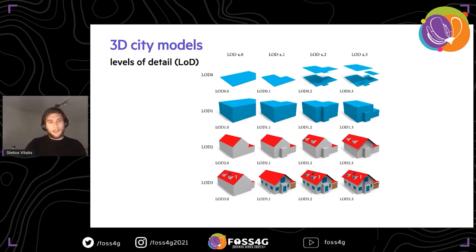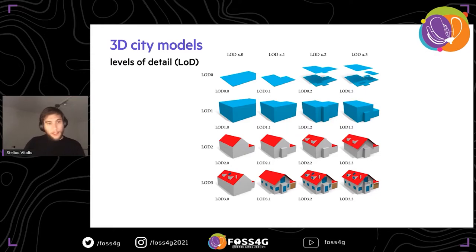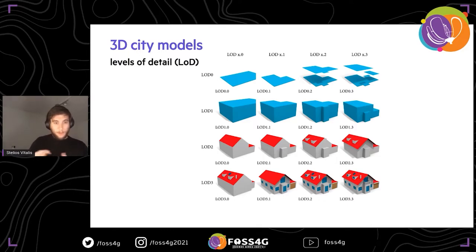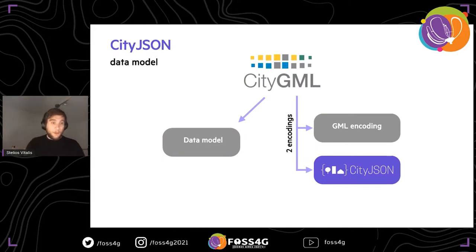The last key notion about 3D City Models is LODs — Levels of Detail. This comes from the generalization aspect in cartography. Depending on the application, you might need a different complexity of geometry, because we don't always need the most complex geometry. We have LOD 0, 1, 2, and 3. It was later refined to include horizontal detail — for example, LOD 1.2 means prismatic objects with enough horizontal detail, while LOD 1.0 means just a bounding box.